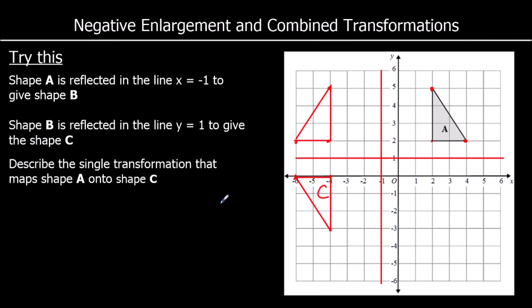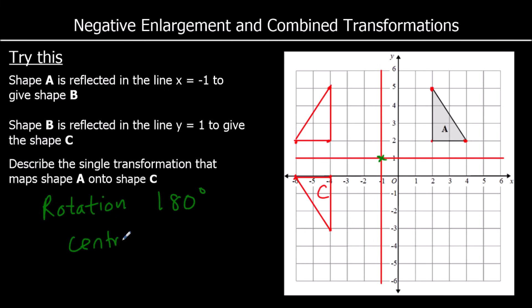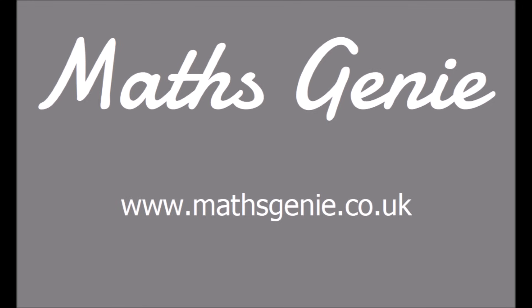Describe the single transformation that maps A onto C. The centre of the rotation is going to be at (-1, 1). So this time we've got a rotation of 180 degrees with a centre of (-1, 1).